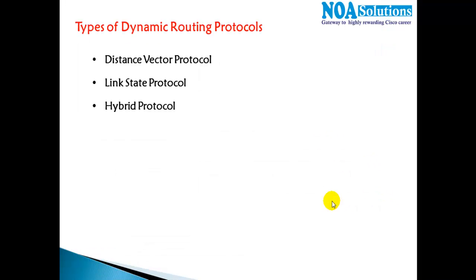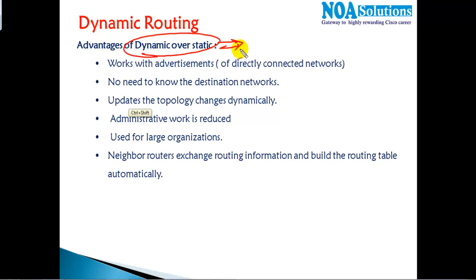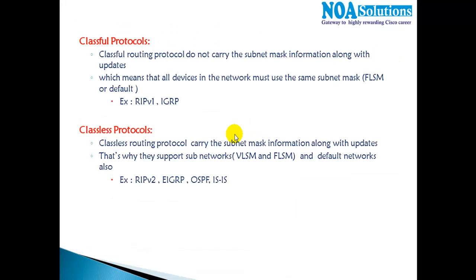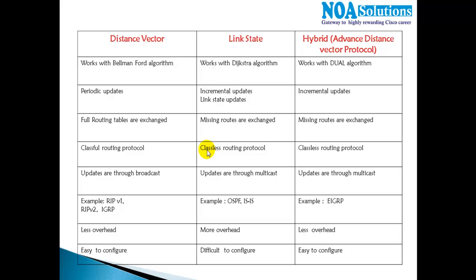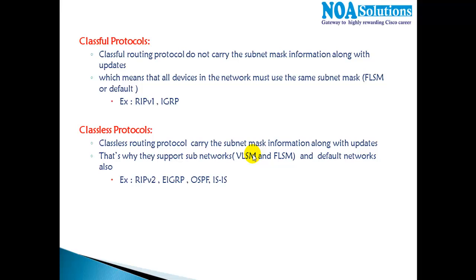In this section we'll continue with our discussion on dynamic routing. In the previous section we saw the major advantages of dynamic routing, which uses dynamic routing protocols. Here we'll see the differences between the different kinds of protocols, their features, and the advantages of link state protocols when compared with distance vector. We'll also cover OSPF, EIGRP, and RIP in more detail individually.